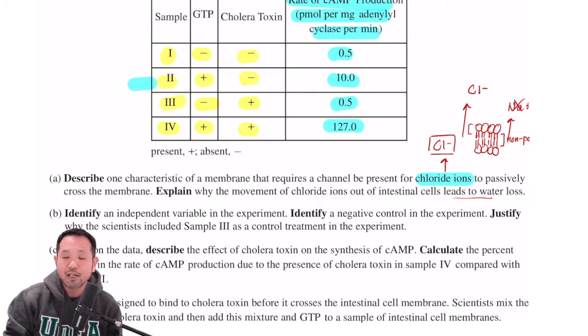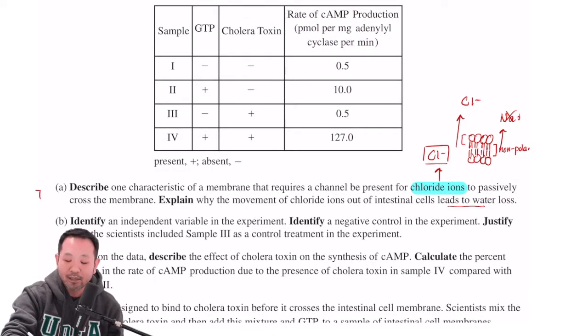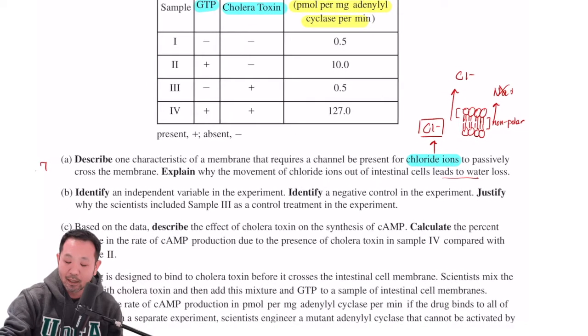So the independent variable, as you guys may remember, are the variables that we establish in order to see how that may affect some result, which we call the dependent variable. So if I go back to this chart over here, what we know is that we were able to control whether these cells had GTP or whether they had cholera toxin. So both GTP and cholera toxin's presence or absence would be possible for the independent variable that's being asked here. And of course, the dependent variable would be the rate of cyclic AMP production.